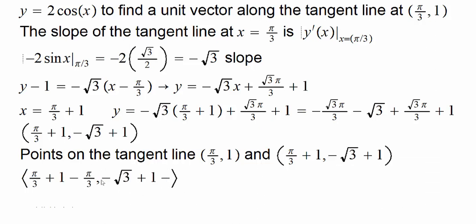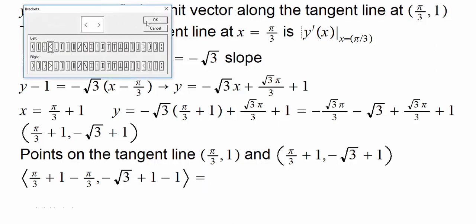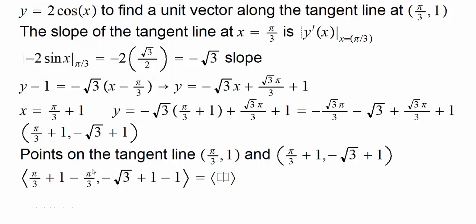We have a vector as, π/3 and π/3 cancel, so we get a 1. And here, 1 and 1 cancel, so we simply get -√3.